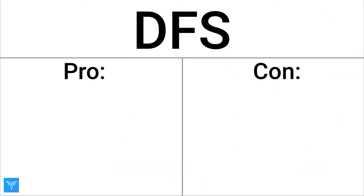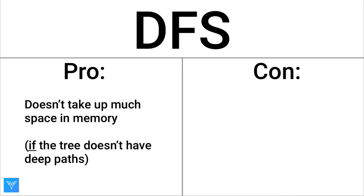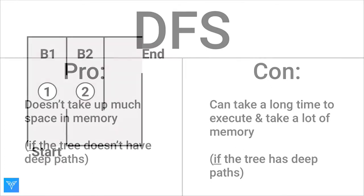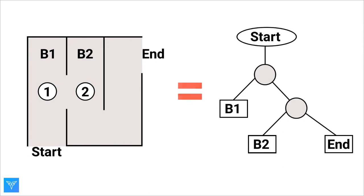For DFS, the greatest number of nodes we ever have to search is the height of the tree. Many trees are designed to minimize height. This means that DFS usually doesn't take much space in memory, making it a good strategy. The downside of DFS is that in the rare case where there's a very long, deep path, the algorithm spends a lot of time exploring, meaning it can take a long time to execute and take up a lot of memory.